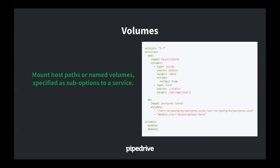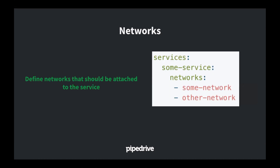Volumes define persistent data for containers — similar to Docker Compose but you can also define external volumes. For example, if you're using the Rex-Ray plugin, you define an external volume in Swarm and reference it there. For networks, define your overlay network with the desired configuration and assign it to your service. If you don't define volumes or networks explicitly, Swarm will create them automatically, making it easier to get started.